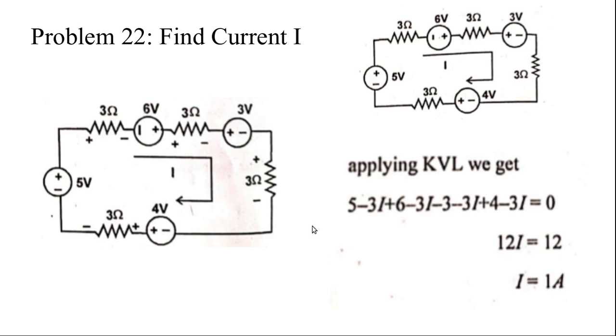Then i equals 1 ampere. Instead of going through the full KVL, you can add the resistances: 3 plus 3 plus 3 plus 3 is 3 into 4, which is 12. So that gives 12i.